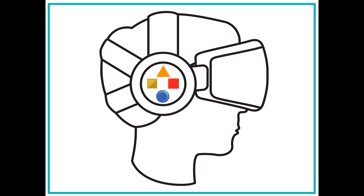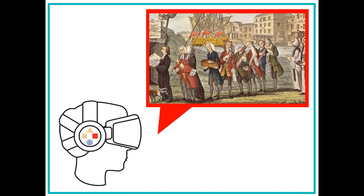Yvette wants the glasses to have three buttons on the side. When users wear the glasses, they will be able to click on the buttons to see different images that represent the colonies during this time. When users click on the first button, they will be able to see how colonists were protesting and rioting in the streets after the Stamp Act was passed. The Stamp Act said that every piece of paper in the colonies was to be taxed.